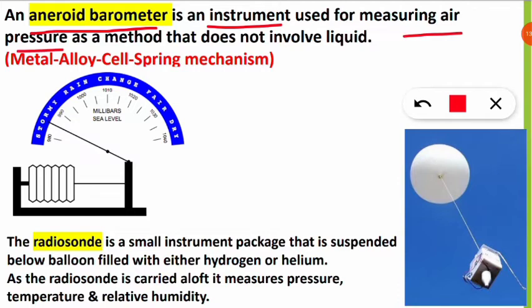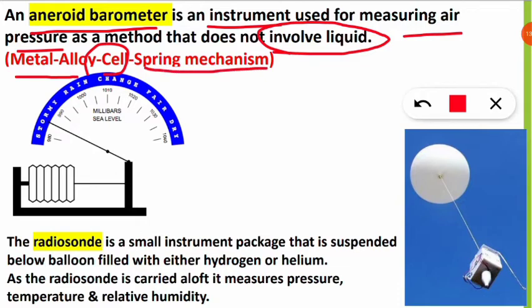The aneroid barometer measures air pressure without any liquid. It uses a metal alloy cell and a spring mechanism to determine pressure. The spring-like alloy made of metals moves according to atmospheric pressure and shows the pressure reading of that area.